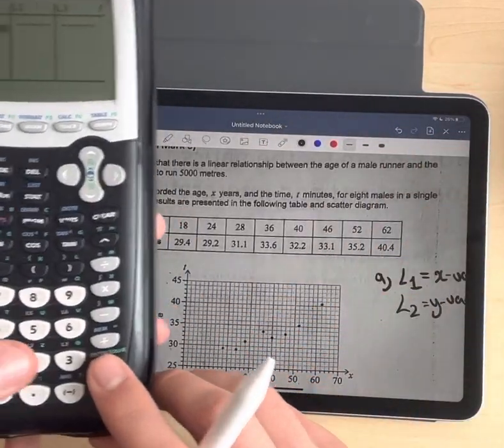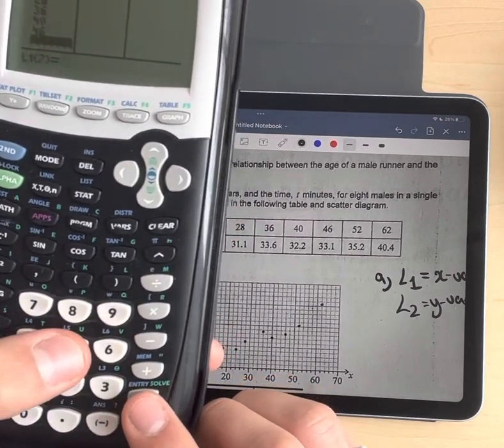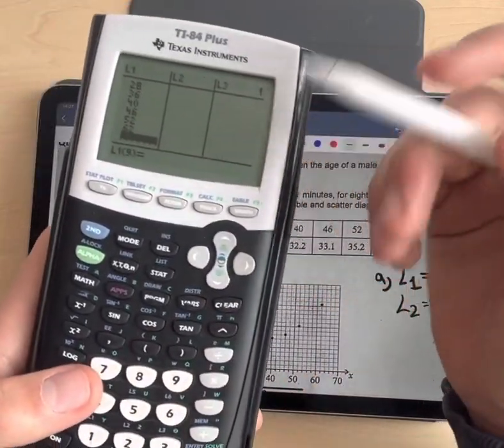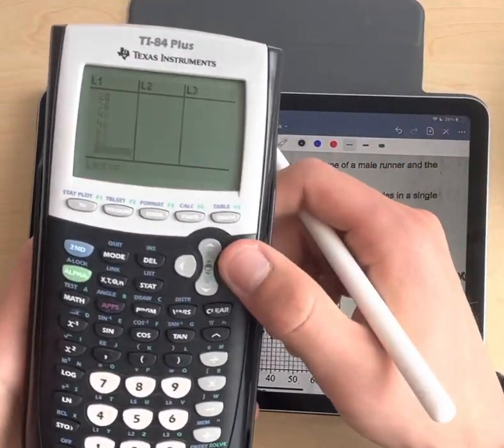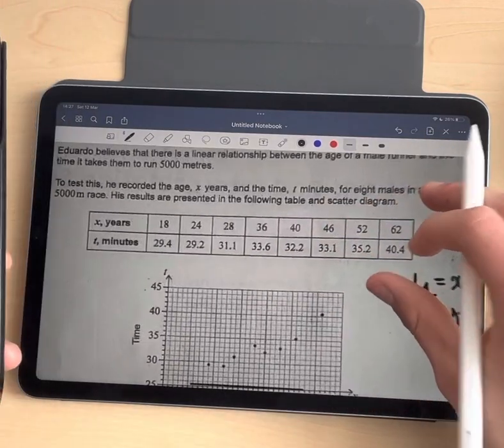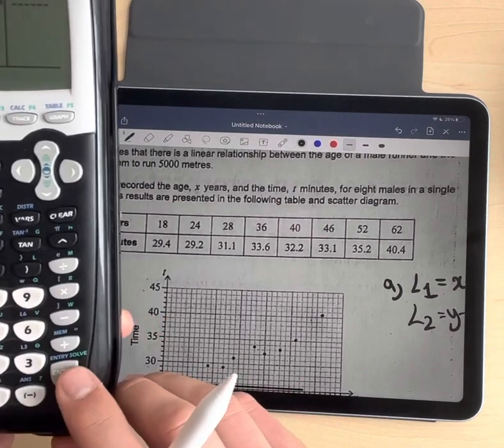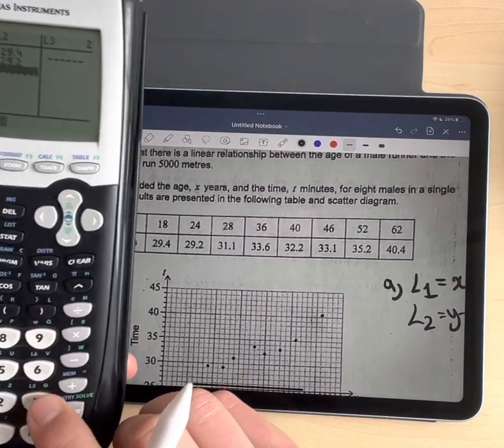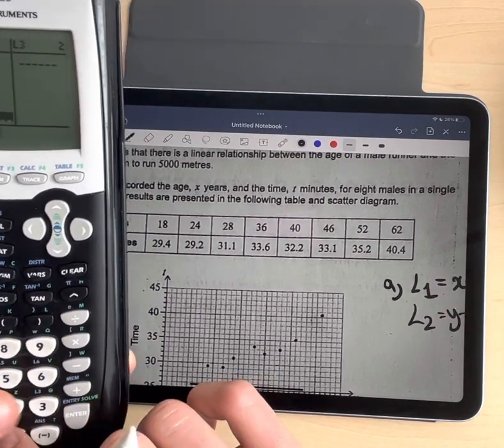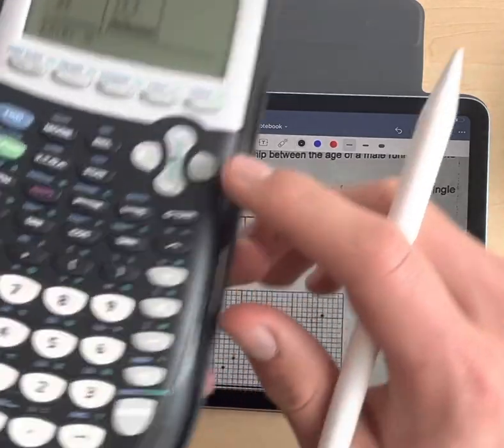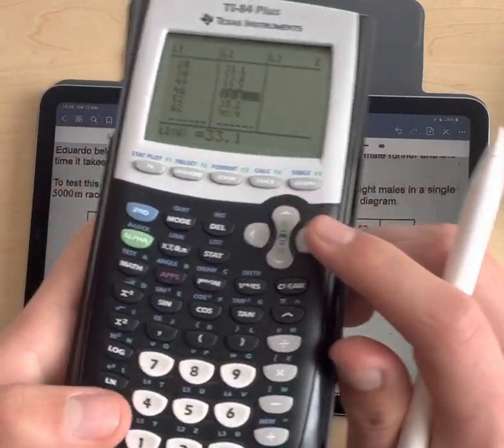Now we enter the values that we see. So it's 18, 24, 28, 36, 40, 46, 52, 62. We entered the independent variable, in this case the age, as age is independent. And what really changes is the time. Now we go to minutes, the time it took to run 5,000 meters: 29.4, 29.2, 31.1, 33.6, 32.2, 33.1, 35.2, and 40.4. We enter the values and check that everything's correct.